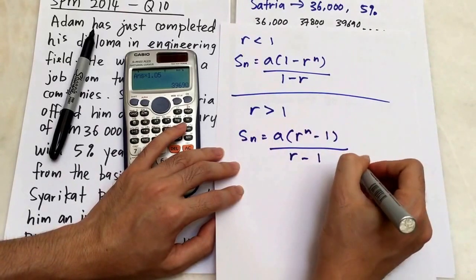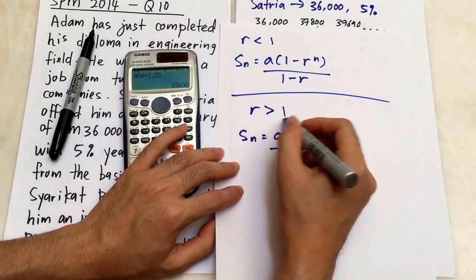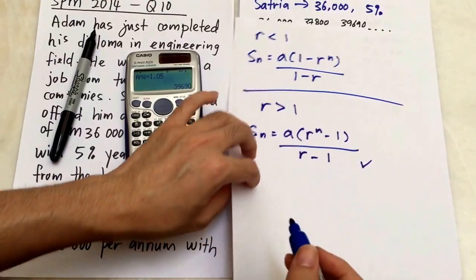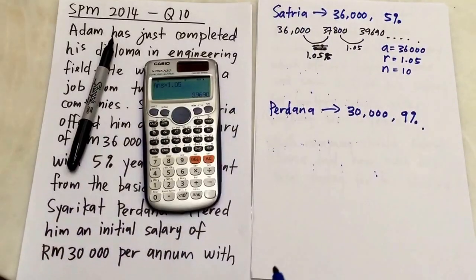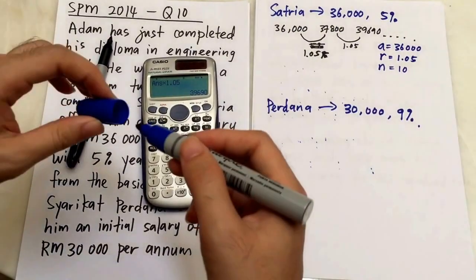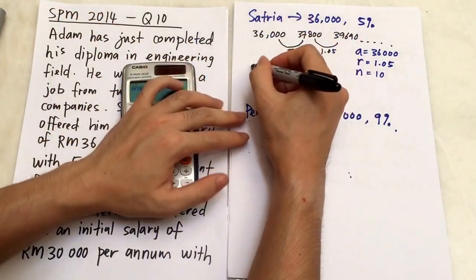We have to use the second formula because our r in this case is 1.05, which is bigger than 1. I'm going to show you how to do this one.